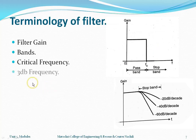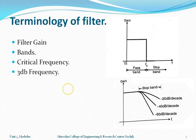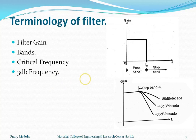The next important terminology is the minus 3dB frequency. This is the frequency at which the power delivered to the load is reduced to 50% of its maximum value. The voltage gain at the minus 3dB frequency is 0.707 times the maximum gain. This is one of the most important terminology parameters in filter analysis.